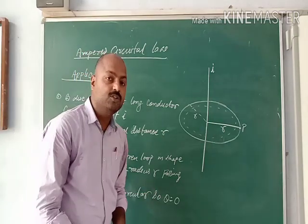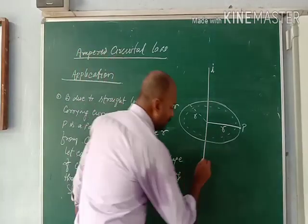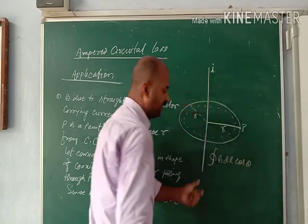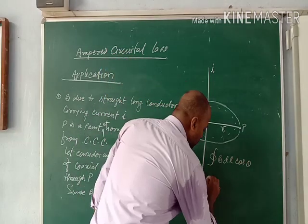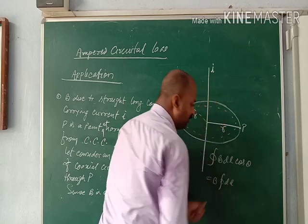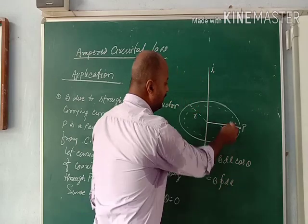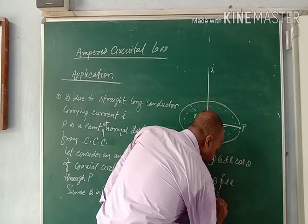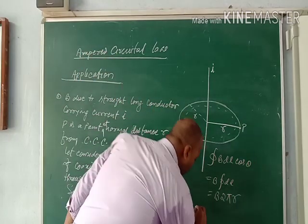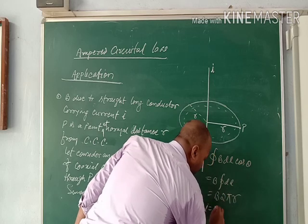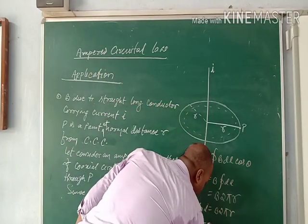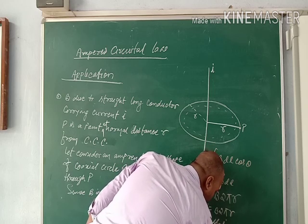Since B is circular and constant along the loop, we take B outside the integral: ∮B·dl·cosθ = B∮dl = B·2πR. According to Ampere's Circuital Law, μ₀I = B·2πR. Therefore, B = μ₀I / 2πR. This is the magnetic field produced by a straight long current-carrying conductor at a point P at distance R.